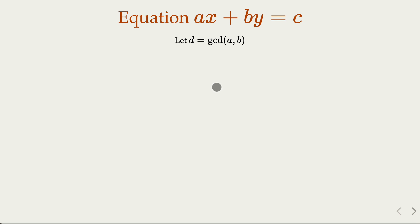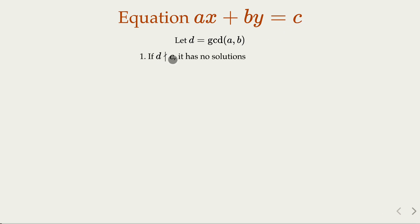Let's review the two-variable case, where coefficients a and b are constant. If the greatest common divisor is d, then the solution depends on whether d is a factor of c or not. If d is not a factor, then the equation has no solutions. On the other hand, if d divides c, then it has infinitely many solutions.